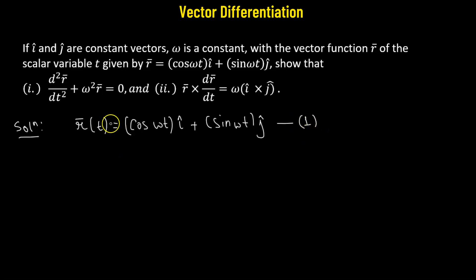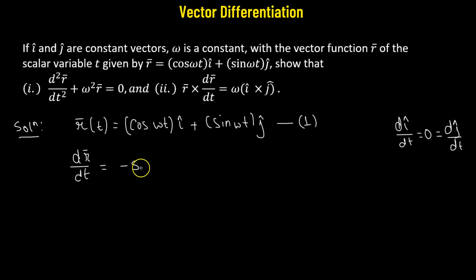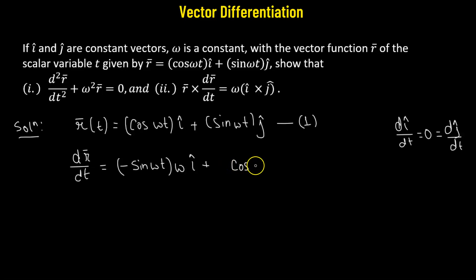Label this as equation 1. Now we take its derivative with respect to t. Because î and ĵ are constant vectors, the derivative of î with respect to t is 0, and similarly the derivative of ĵ with respect to t is 0. So we only need to differentiate cos(ωt) and sin(ωt). By the chain rule, the derivative gives us -ω sin(ωt)î + ω cos(ωt)ĵ. Label this equation 2.